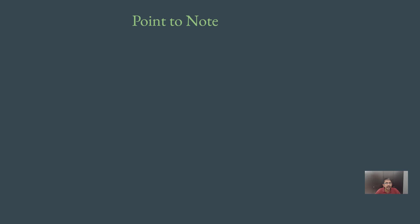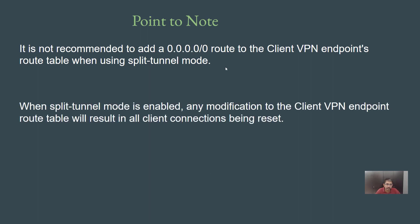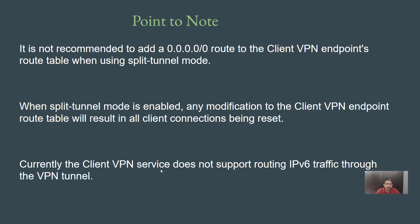Before we conclude, there are some important pointers. First, if split tunnel is enabled, it is not recommended to add a 0.0.0.0/0 route to the client VPN endpoint's route table — that is only useful when split tunnel mode is not enabled. Second, when split tunnel is enabled, modifying the route table will result in the client connection being reset. Third, the client VPN service currently does not support routing IPv6 traffic through the VPN tunnel.